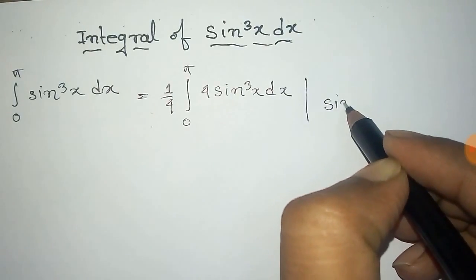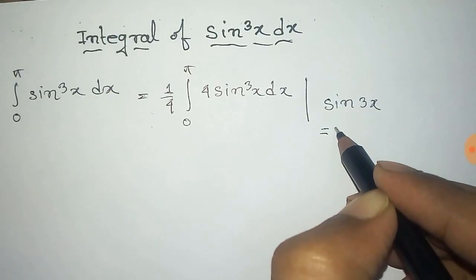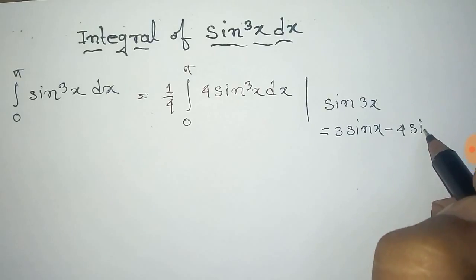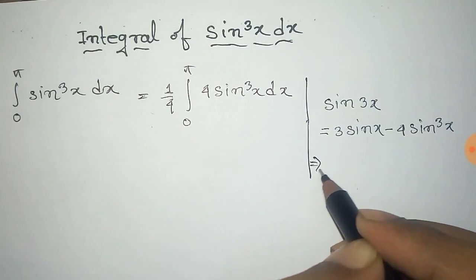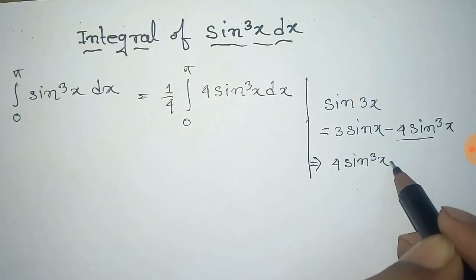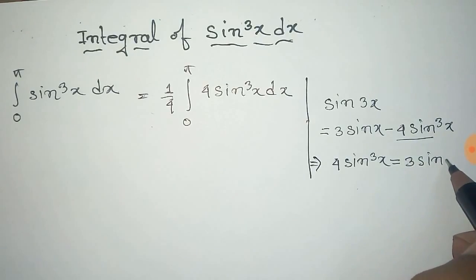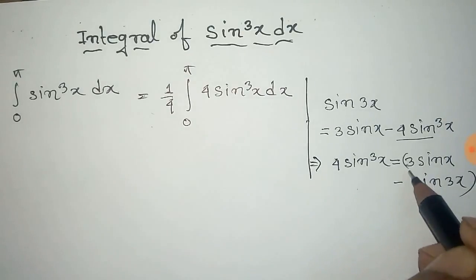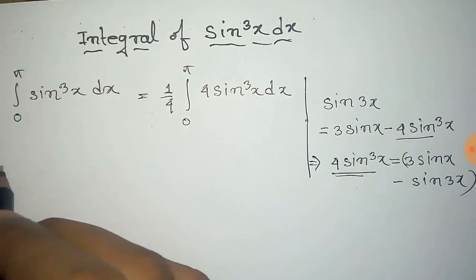We know the formula: sin(3x) = 3sin(x) − 4sin³(x). From this we get the value of 4sin³(x), that is equal to 3sin(x) − sin(3x). Now we substitute this value of 4sin³(x) into the integral.